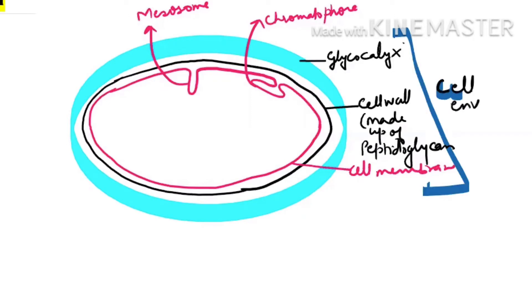In bacteria, all three layers together are known as the cell envelope. The cell envelope consists of three layers: first is glycocalyx, second is cell wall, and third is cell membrane.